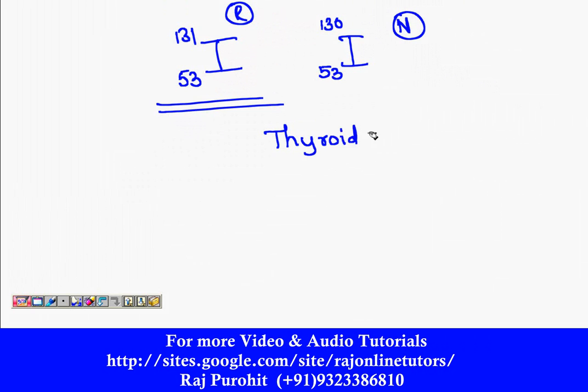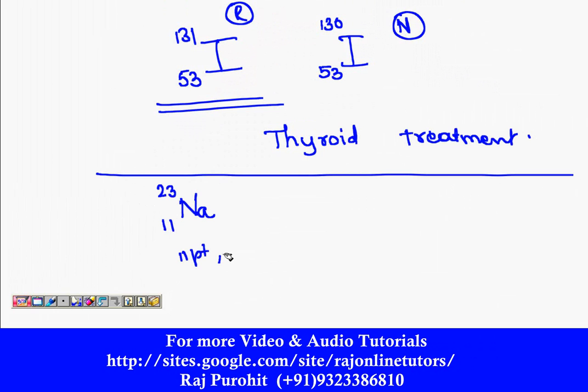Then one more medicinal use is there: sodium. Natural isotopes of sodium - its atomic number is 11, its mass number is 23. It means here there are 11 protons and 12 neutrons. But the isotopic sodium, that is radioisotope of sodium, is having atomic number 11 but its atomic mass number is 24. It means here it will have 11 protons and 13 neutrons.